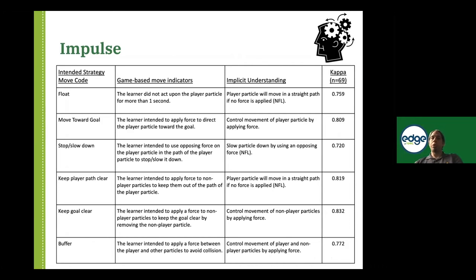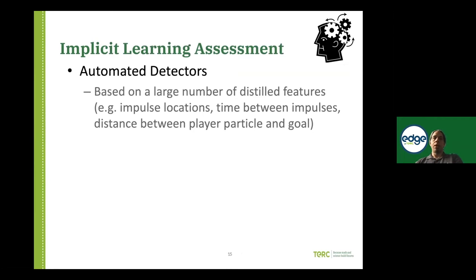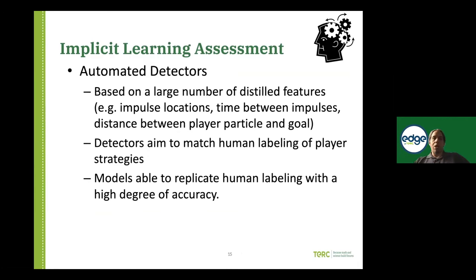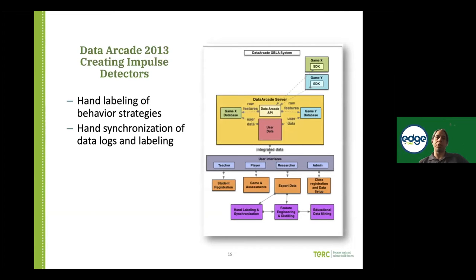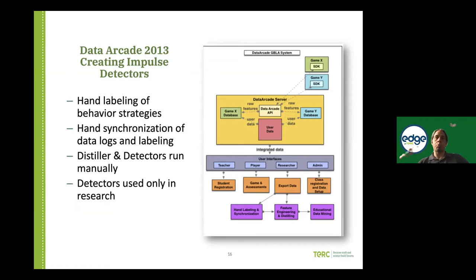In previous work using detectors, the EDGE team had come up with a range of strategies — looking at game-based indicators for those strategies and the types of implicit knowledge they reflect. These were mostly distilled features based on hand coding done by the team. This is what Data Arcade looked like prior to this project: it involved hand labeling of strategies and then mining the data to look for indicators for those hand-labeled strategies.